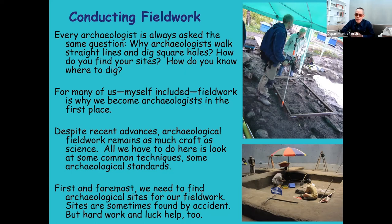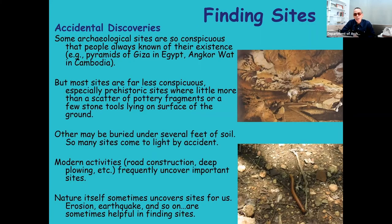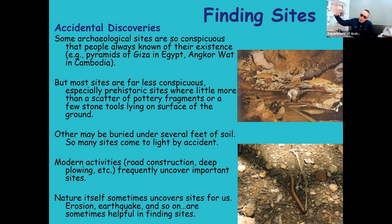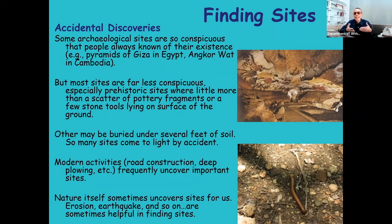So first and foremost, you need to find sites for your fieldwork. Sites can be found sometimes by accident, but you don't need to wait for an accident. Sites can be found by what we call accidental discoveries — for example, in the context of Thailand, many famous sites like Ban Chiang and other sites in the Northeast have been found by rice farmers when they plowed their land, and ancient objects buried about 40–50 centimeters below the surface were turned up. Or after rain, during the rainy season, rain erodes the surface and objects appear. This can lead to the discovery of sites.